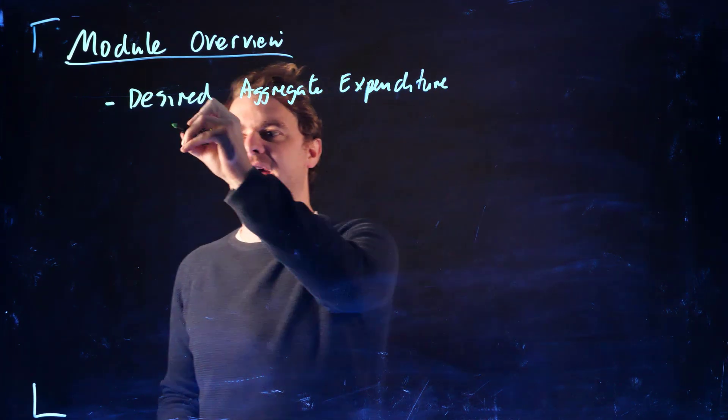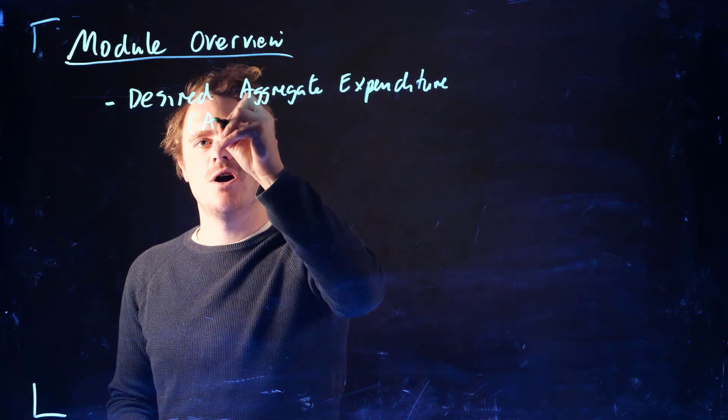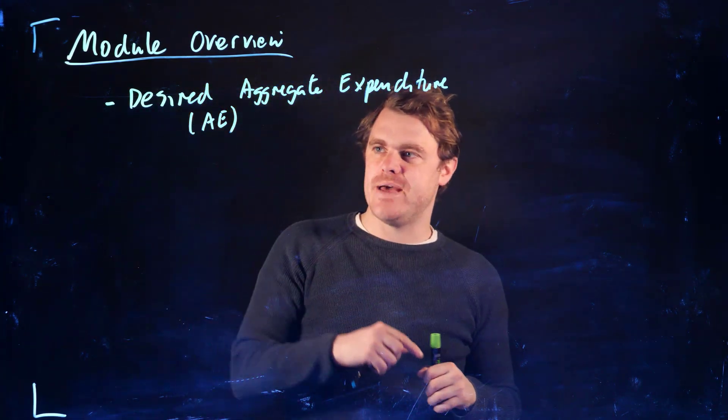We'll talk about what we mean by desired. We usually call this AE for aggregate expenditure.